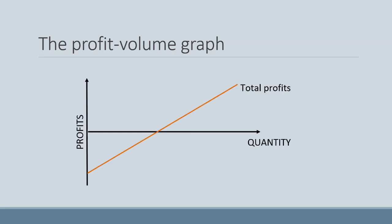Next, we have our profit volume graph. This graph plots only one line on the set of axes, being our total profit line. Remember, the total profit is simply calculated as our total revenue less our total costs. In this graph, the x-axis represents a zero profit.